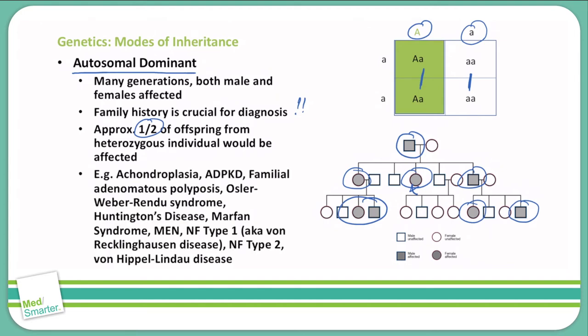Examples of autosomal dominant inheritance include achondroplasia, autosomal dominant polycystic kidney disease, familial adenomatous polyposis, Osler-Weber-Rendu syndrome, Huntington's disease, Marfan syndrome, MEN, neurofibromatosis type 1 (also known as von Recklinghausen's disease), neurofibromatosis type 2, and von Hippel-Lindau disease. Note that Huntington's disease also shows anticipation, which we discussed earlier, so it can have more than just one trait to it.